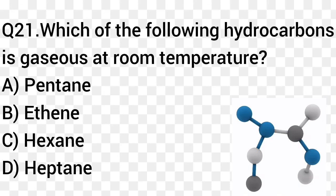Question number 21. Which of the following hydrocarbons is gaseous at room temperature? Option A: Pentane. Option B: Ethene. Option C: Hexane. Option D: Heptane. The right answer is option B, Ethene.